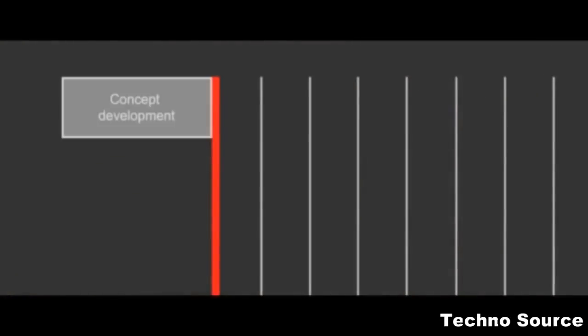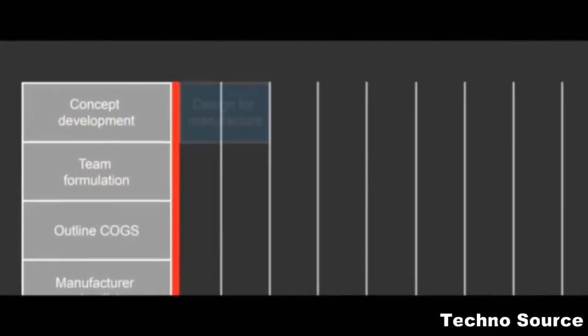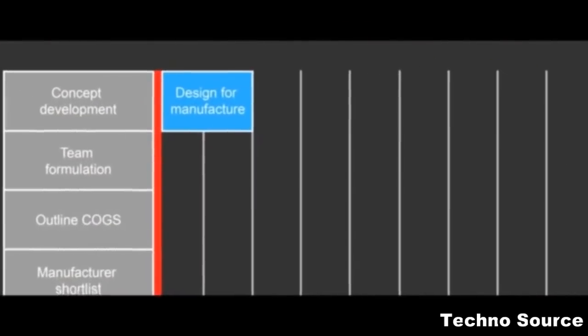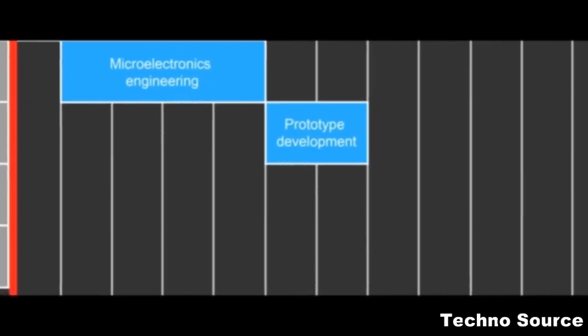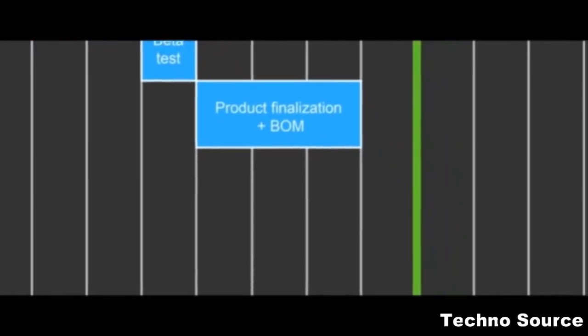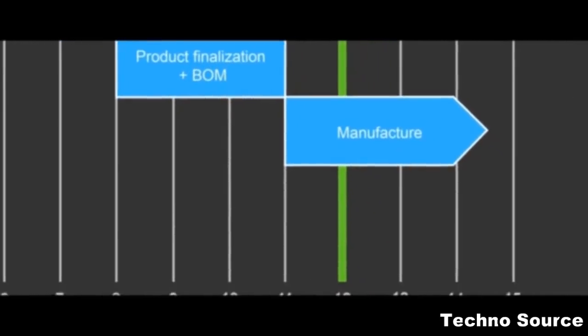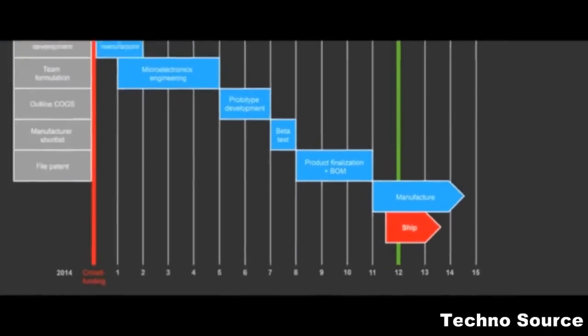We have been working really hard to reach where we are today. In the last year, we have developed our concept, formulated our team, outlined our cost of goods, created a manufacturer shortlist, and filed our patent. To make Retouch 3D become a reality, we have mapped out the next 12 months. We will spend the next two months preparing our design for manufacture and starting the microelectronics engineering. Month 5 we will see us entering the prototype phase, and in our 7th month, we will expect to begin our beta testing. Subject to beta test results, we expect to finalize the product and bill of materials by month 8. If all goes well, we will start manufacturing in month 11, with first product shipping by month 12.